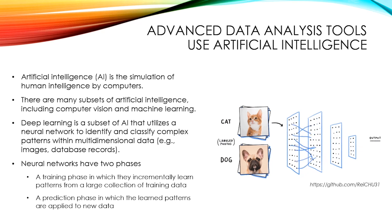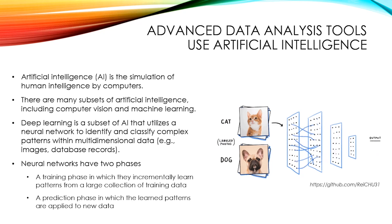Neural networks have two phases: a training phase, in which they incrementally learn patterns from a large collection of training data, and a prediction phase, in which the learned patterns are applied to new data.